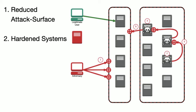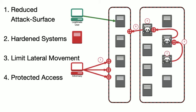To disrupt the lateral movement of an attacker, you might restrict what systems can talk to what other systems, as well as protect the assets with appropriate authentication and authorization controls, while also disrupting the data exfiltration with additional egress controls. Note how each of these is an independent stage, with its own protections, that does not depend on the other mechanisms nor makes assumptions about the environment.